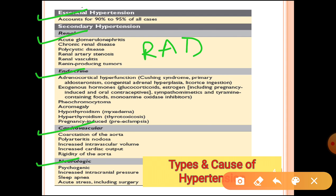Endocrine causes include Cushing syndrome, aldosteronism, congenital adrenal hyperplasia, excessive steroid hormones, excessive estrogens or OC pills, pheochromocytoma (a tumor of the adrenal medulla), thyroid dysfunction, and acromegaly from excessive growth hormone. Cardiovascular causes include coarctation of the aorta, polyarteritis nodosa, and rigidity of the aorta. Neurogenic causes include excessive stress, post-traumatic stress disorder, or increased intracranial pressure.